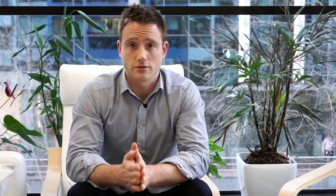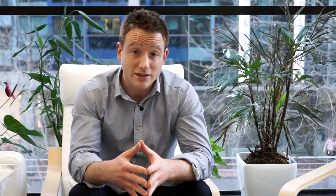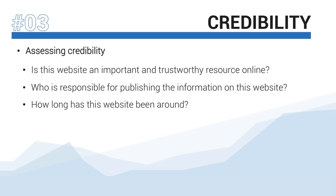Starting with the first pillar: credibility. To assess credibility, you're going to look at the website that's linking to you and ask yourself the following questions. Is this website an important and trustworthy resource online, or put another way, would you feel comfortable recommending this site to a friend or relative? Who is responsible for publishing the information on this site, and is it a person or team recognized for their expertise? And how long has this website been around — is it brand new or does it have an established history? If the website linking to you is recognized, trusted, and its content is produced by experts in the field, then you have a credible link that's very likely to have high SEO value.